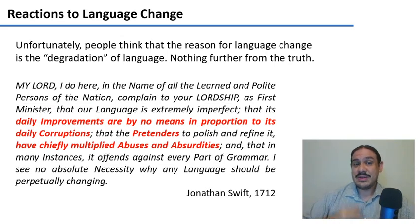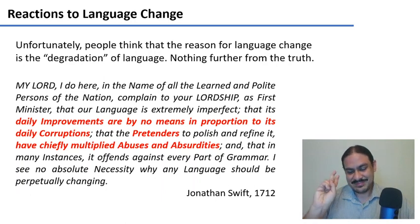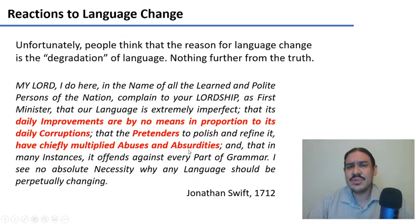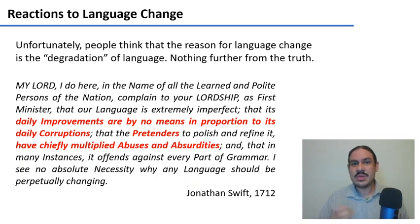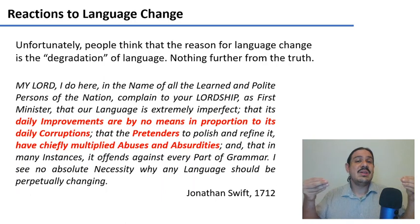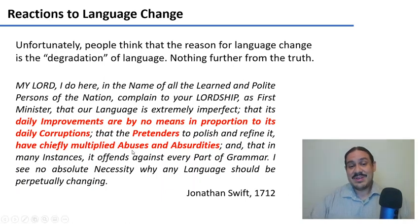Please pause the video and read this letter from Jonathan Swift. People have said this forever: that whenever language changes, it's corruption, and that pretenders have multiplied abuses and absurdities in English. I'm sure you've heard these discourses about how English is spoken by the youth — that young people mangle language and don't know how to express themselves anymore. This is wrong. Language changes because people want to make social distinctions, and because of random mutations that happen over time — not because of degradation. Our language does not contain more abuses and absurdities than the English of 1712.